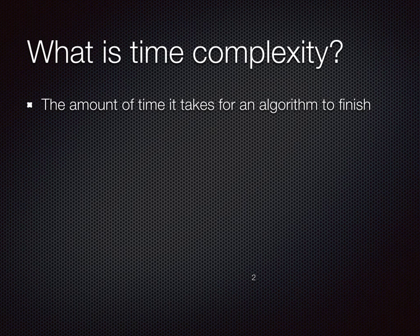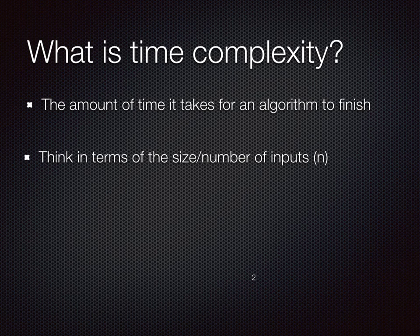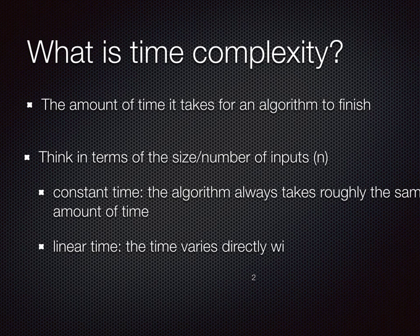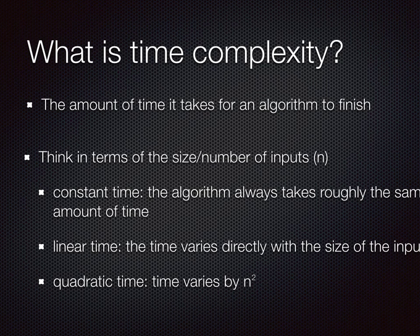Time complexity, you can think of it in terms of the size and number of inputs, n. Constant time is an algorithm that always takes roughly the same amount of time, no matter how big the inputs are. Linear time, the time varies directly with the size of the input, kind of like a constant slope in algebra. And then quadratic time, the time varies by n squared. Not too bad when there's a small size of inputs, but once those increase, the amount of time it takes to finish the algorithm will increase rapidly.